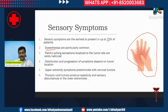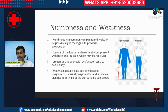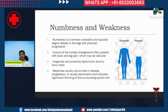Only the lower abdomen and legs are involved with thoracic cord tumors. Numbness is a common complaint and typically begins distally in the legs and progresses proximally. Initially the patient will have numbness in the legs and it slowly goes up, whereas weakness is more common in the upper limbs and less common in the lower limbs. The sensory loss is more prominent in the legs, whereas the weakness is more prominent in the hands.